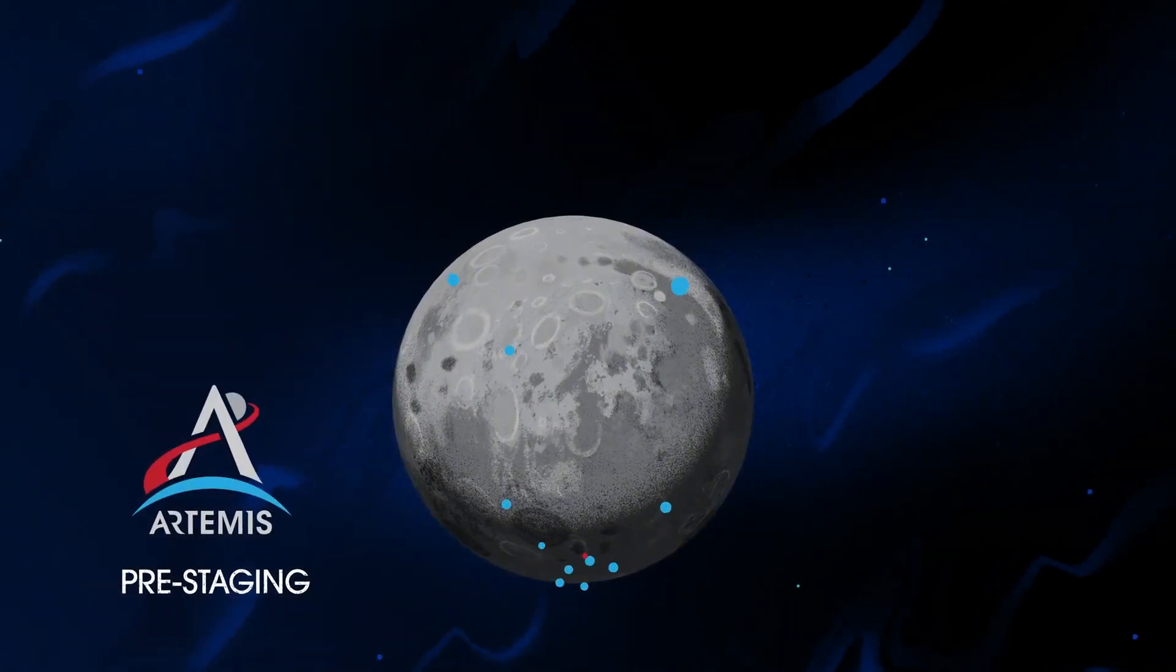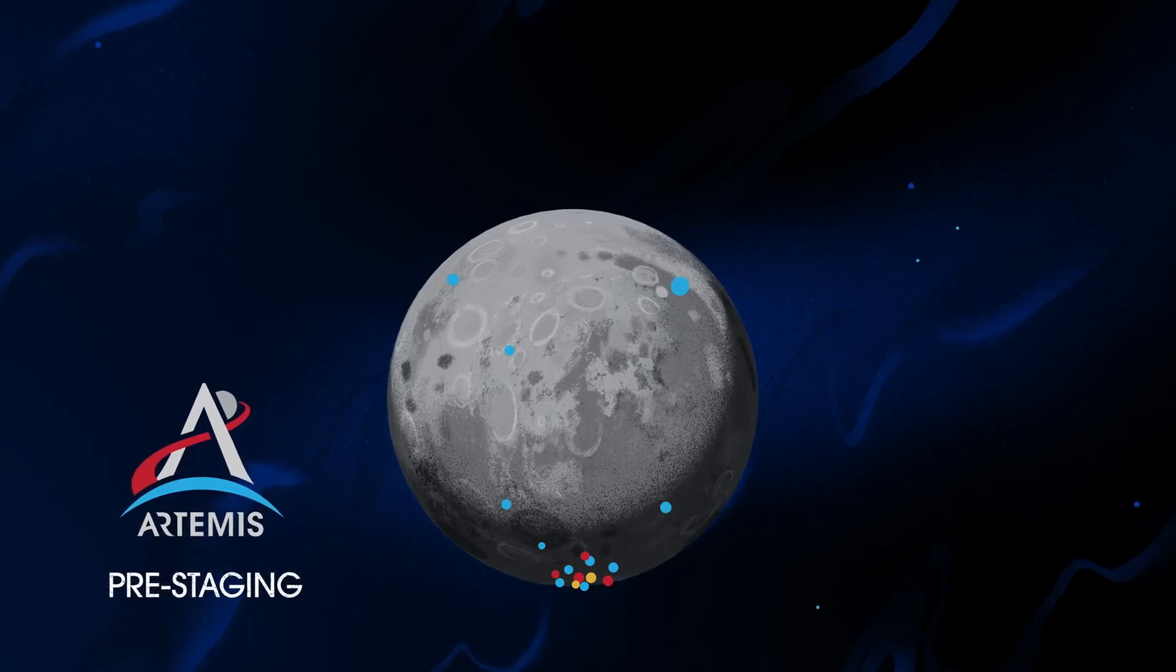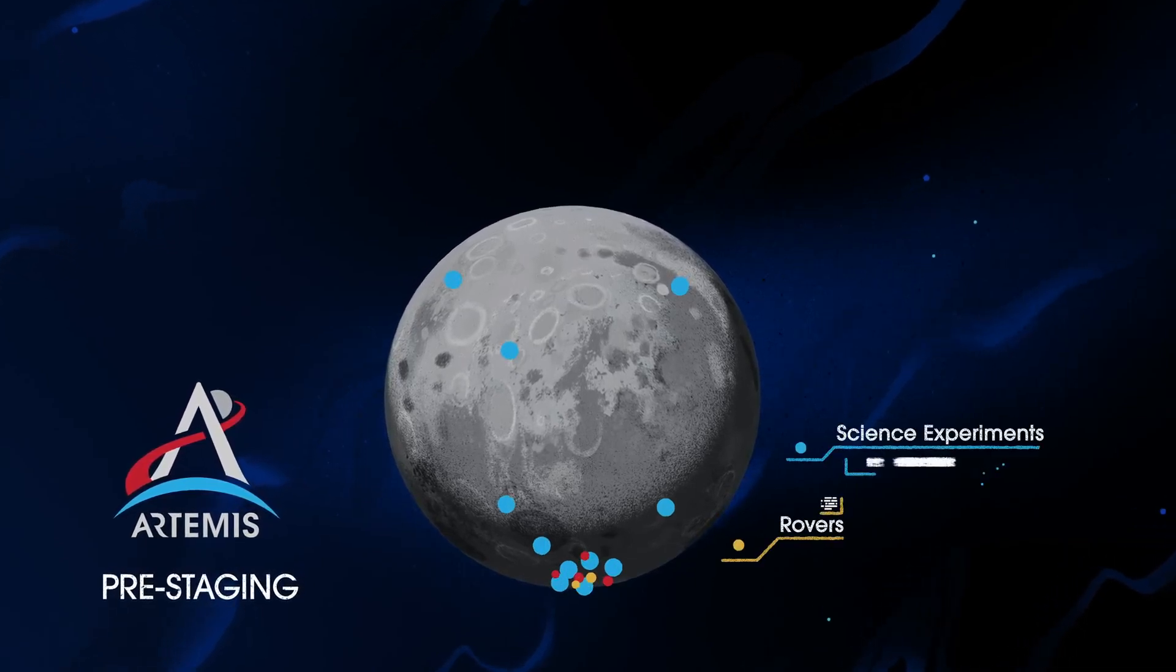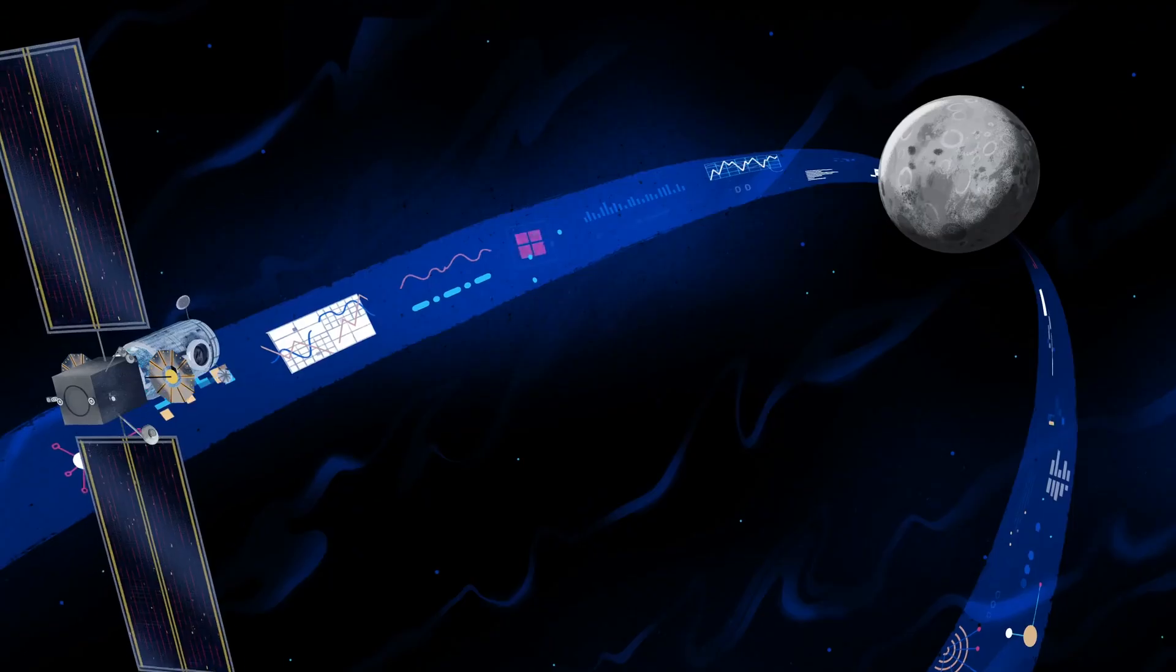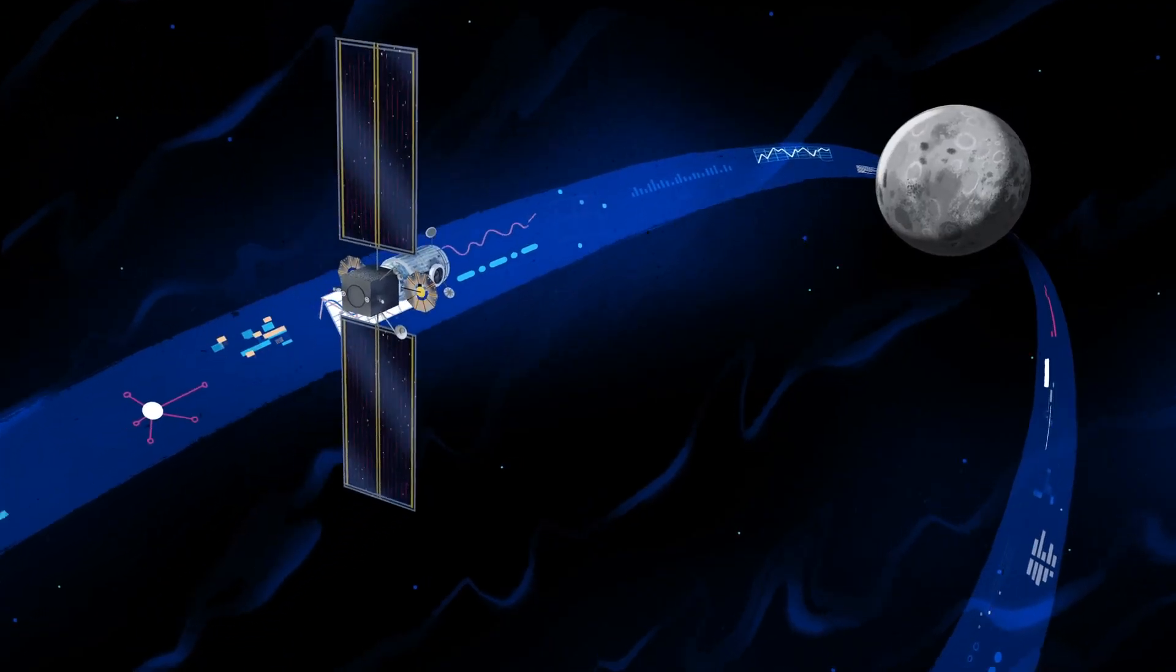Everything needed for lunar missions will be positioned in advance by commercial and international partners. This includes rovers, science experiments, and human-rated systems on the surface. But it also includes a dedicated lunar station in orbit around the Moon called Gateway.